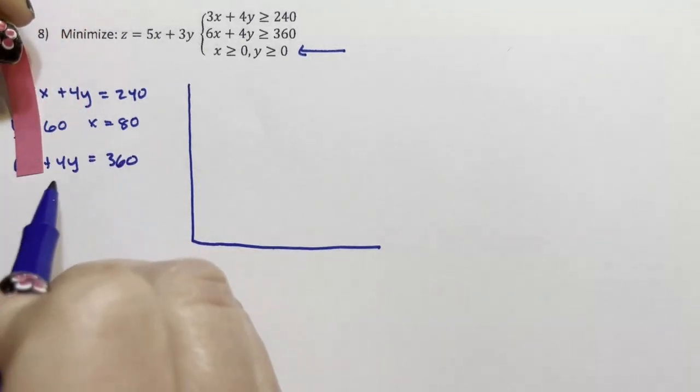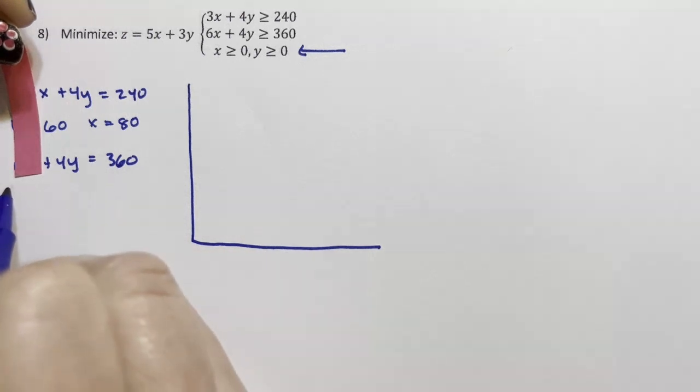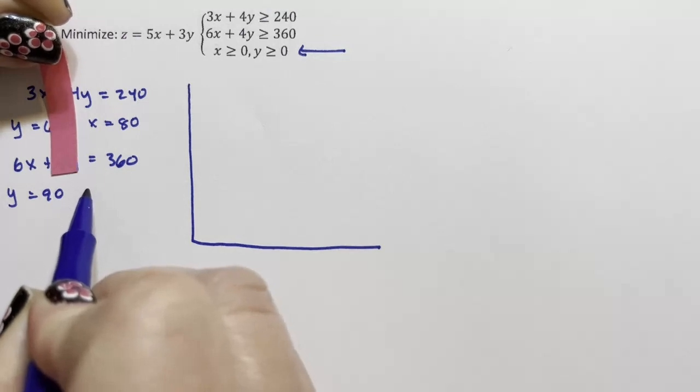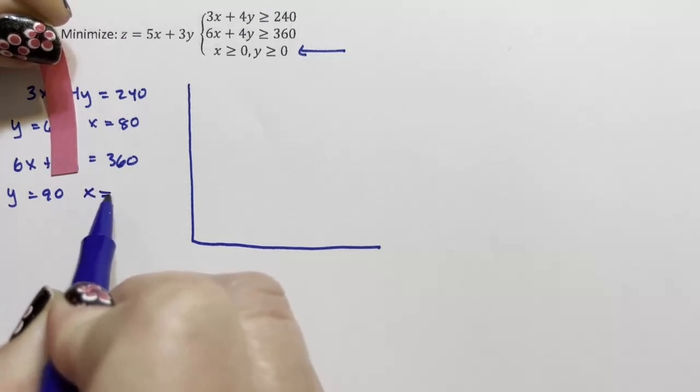If x is zero, 4y equals 360 and y equals 90. And if y is zero, then 6x equals 60. We divide both sides by six and x equals 60.